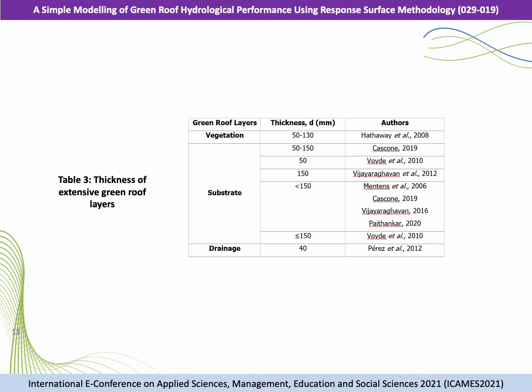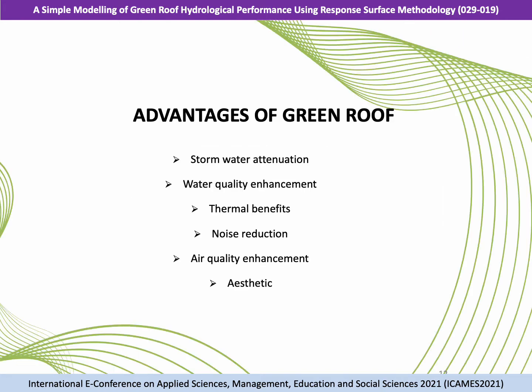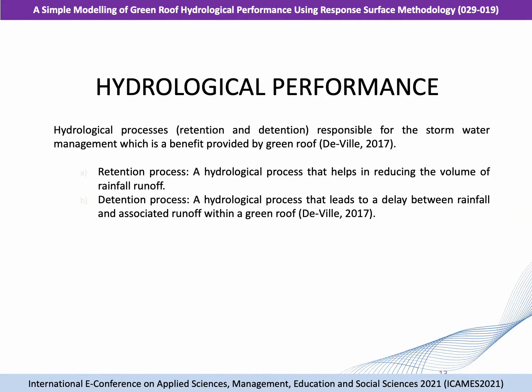Table 3 shows the thickness of extensive green roof layers. The advantages of green roof include stormwater attenuation, water quality enhancement, thermal benefit, noise reduction, air quality enhancement, and aesthetics. The hydrological processes of retention and detention are responsible for stormwater management. Retention is a hydrological process that helps in reducing the volume of rainfall runoff, while detention is a hydrological process that leads to a delay between rainfall and associated runoff within a green roof.